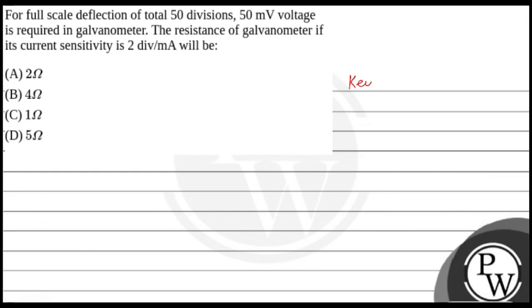So the key concept used here is galvanometer. Now we know resistance equals kya hota hai - that is current sensitivity upon voltage sensitivity, right.